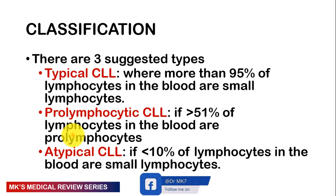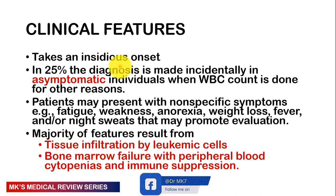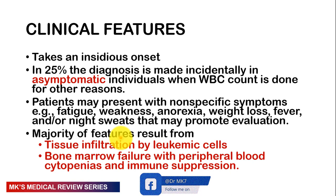CLL can transform into a higher-grade non-Hodgkin lymphoma — specifically, about 2 to 10% of patients develop diffuse large B-cell lymphoma, known as Richter's transformation. CLL can be classified into three types: typical CLL with more than 95% small lymphocytes in blood; pro-lymphocytic CLL with more than 51% pro-lymphocytes; and atypical CLL with less than 10% small lymphocytes. Clinical course is insidious. About 25% of cases are diagnosed accidentally in asymptomatic patients with an abnormal white blood cell count. Symptoms include fatigue, weakness, anorexia, weight loss, fever, and night sweats. Features result from tissue infiltration by leukemic cells or bone marrow suppression causing cytopenias and immunosuppression.